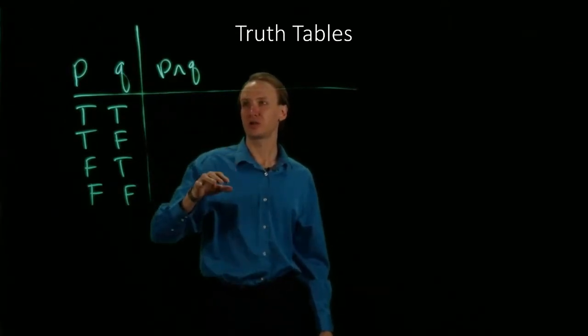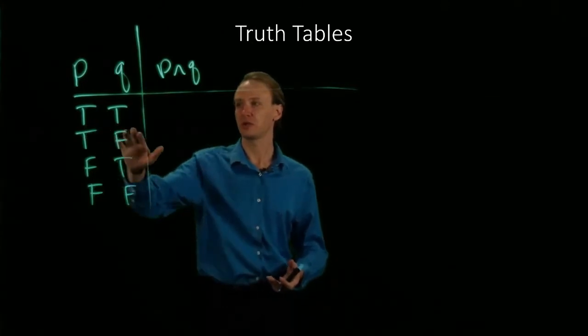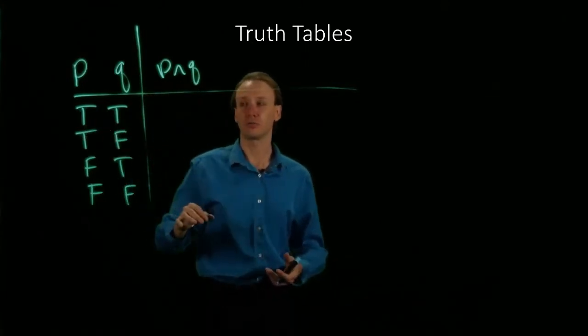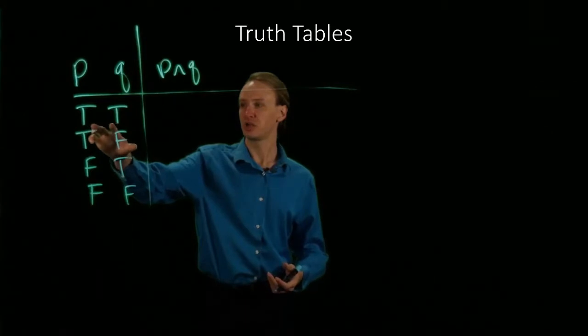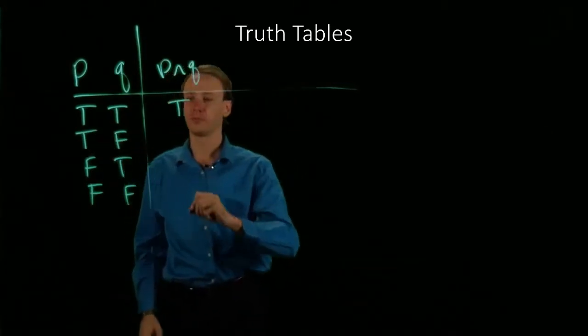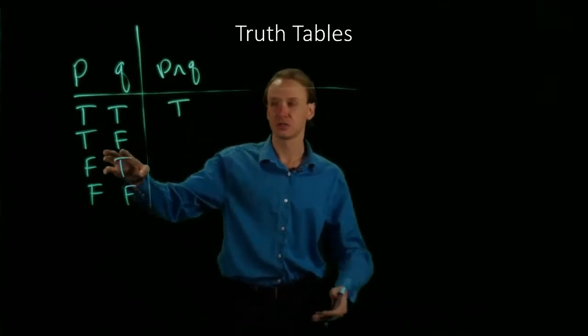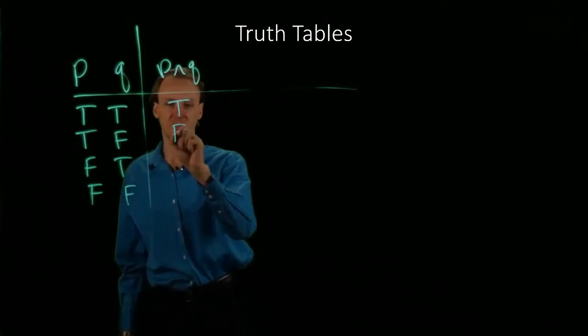For the AND operation, I know that the AND is only going to be true if both P and Q are true. So this first case where P and Q are true, I will write down true. In the second case, P is true but Q is false, so this is false.